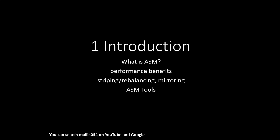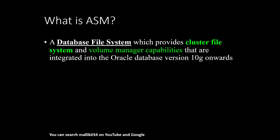In today's session I'll cover what is ASM and its advantages. ASM is a database file system which provides cluster file system and volume manager capabilities, introduced in Oracle Database version 10g R2. A cluster file system is a shared file system where two or three instances can access shared storage — that is a clustered file system.